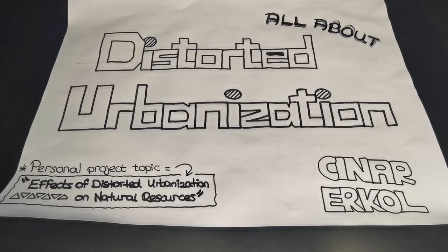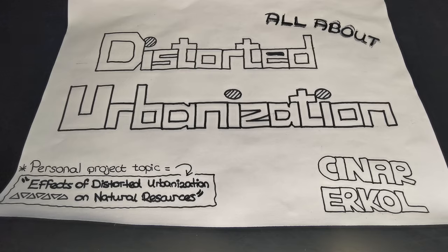But first of all, let's do a little review. In the last video, which is my first video of this project, I talked about urbanization: what is urbanization, what are the types, and what are the causes and effects of urbanization. I mentioned that urbanization is the increasing proportion of cities and towns in population. Urbanization has basically two types: proper and distorted urbanization.